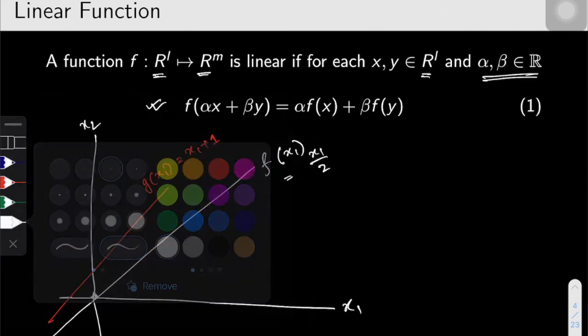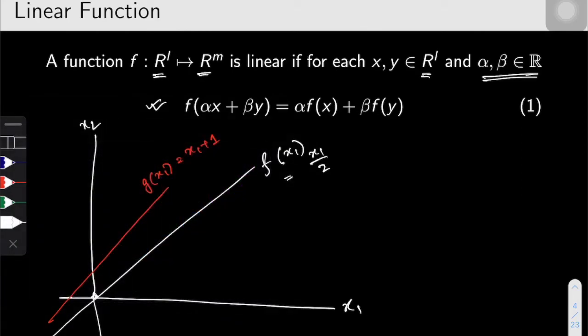Now let's see if these two functions are linear functions or not. So let's start with the function f. If I try to write this function f as alpha x₁ for any two arbitrary numbers alpha, beta plus beta y₁ when x₁ and y₁ are two points, then I can actually break it down as alpha x₁ plus beta y₁ divided by two.